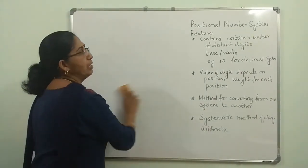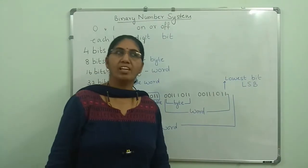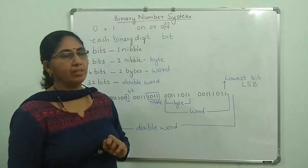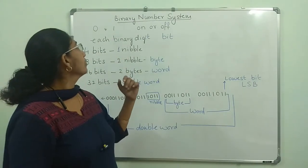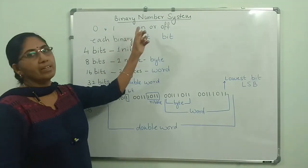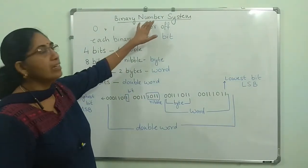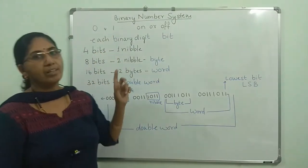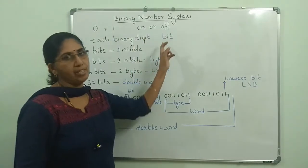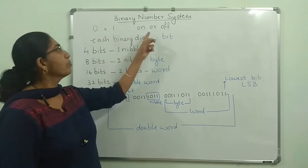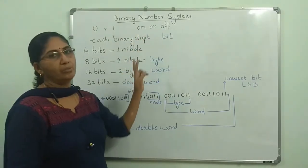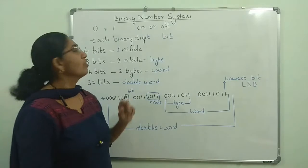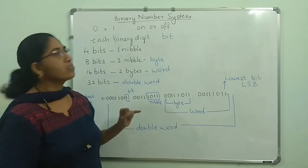In digital devices like calculators and computers, we use the binary number system. We cannot use the decimal system there because the circuitry is designed to operate in binary, since binary is represented by 0 and 1 only. These two digits can be represented by an off state or on state — if it is 0 it is off, if it is 1 it is on. Based on these two logic states, switches are arranged so that binary is incorporated in calculators and computers. That is the significance of binary numbers.